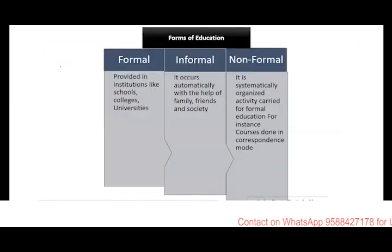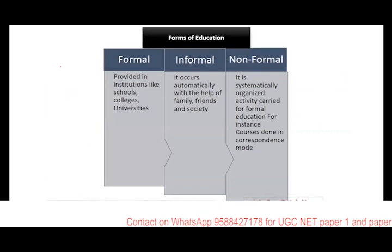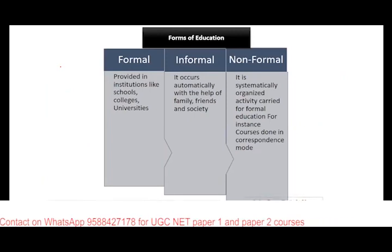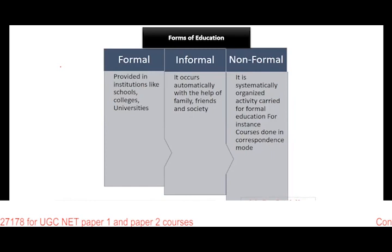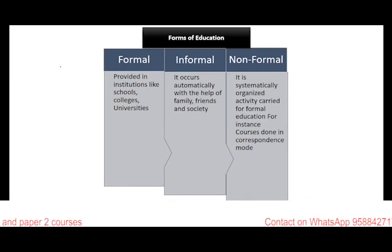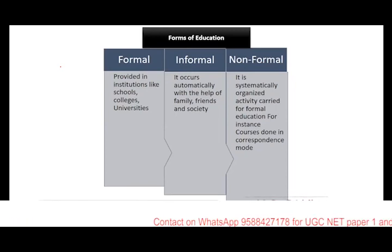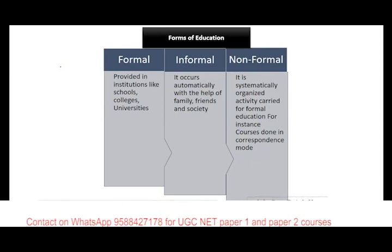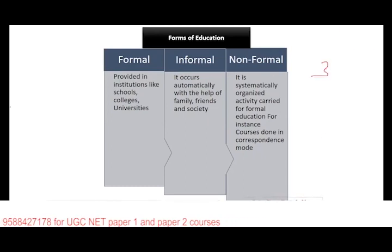The next topic is forms of education. There are three forms: formal, informal, and non-formal. Formal is provided with the help of schools, colleges, and universities. Informal is where the child first comes in contact with the learning process through family, friends, and society. Non-formal is a systematic activity carried out through distance learning — that is correspondence courses done in correspondence mode. So the three forms of education are formal, informal, and non-formal.